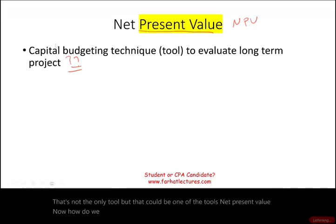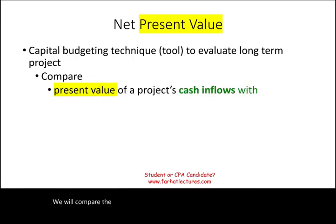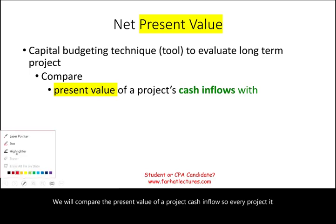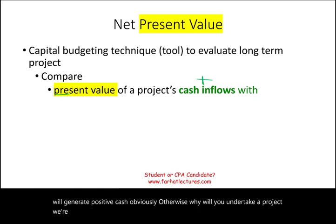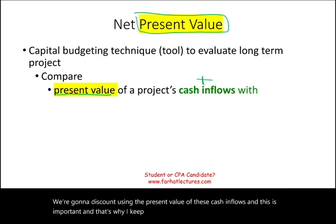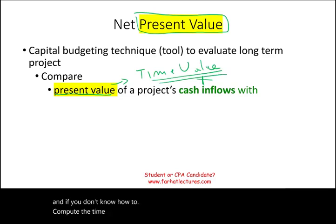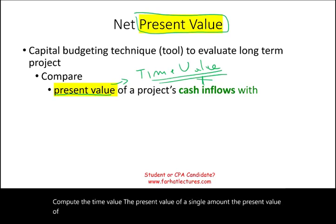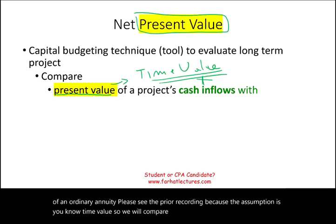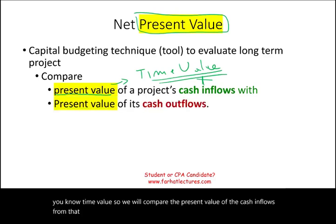In net present value, we compare the present value of a project's cash inflows — because every project will generate positive cash, otherwise why would you undertake it — and we discount those using the present value concept. This is important, and that's why I keep highlighting the words 'present value' in yellow, because here we are using the time value of money. If you don't know how to compute the present value of a single amount or an ordinary annuity, please see the prior recording.